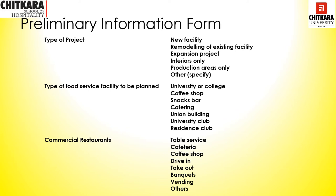The second point covers the type of food service facility to be planned. It could be for a university or college, a coffee shop, a snack bar, a catering unit, a union building, a university club, or a residence club. We need to keep in mind the location, how it will be set up, and what kind of service needs to be provided in that type of business.